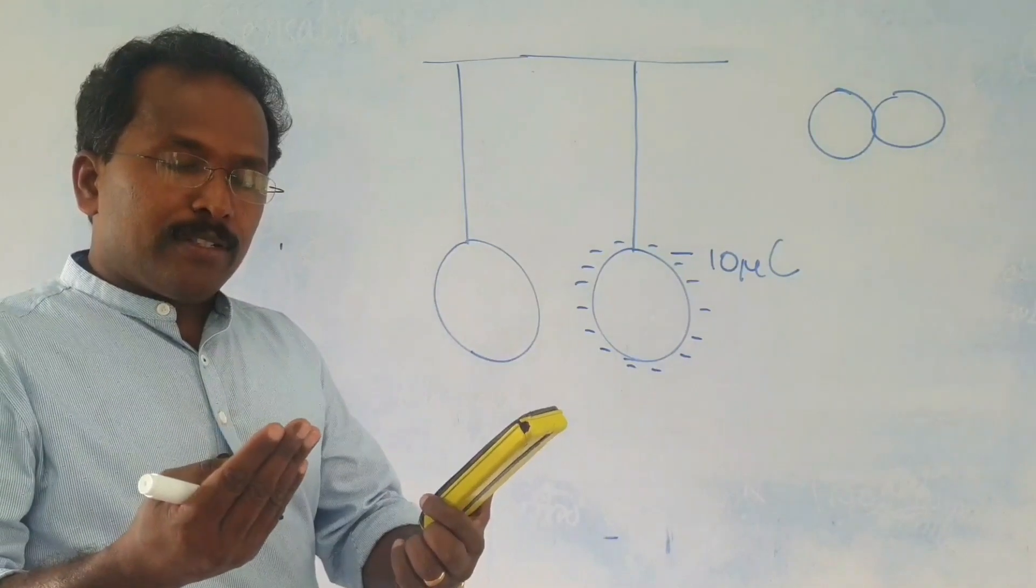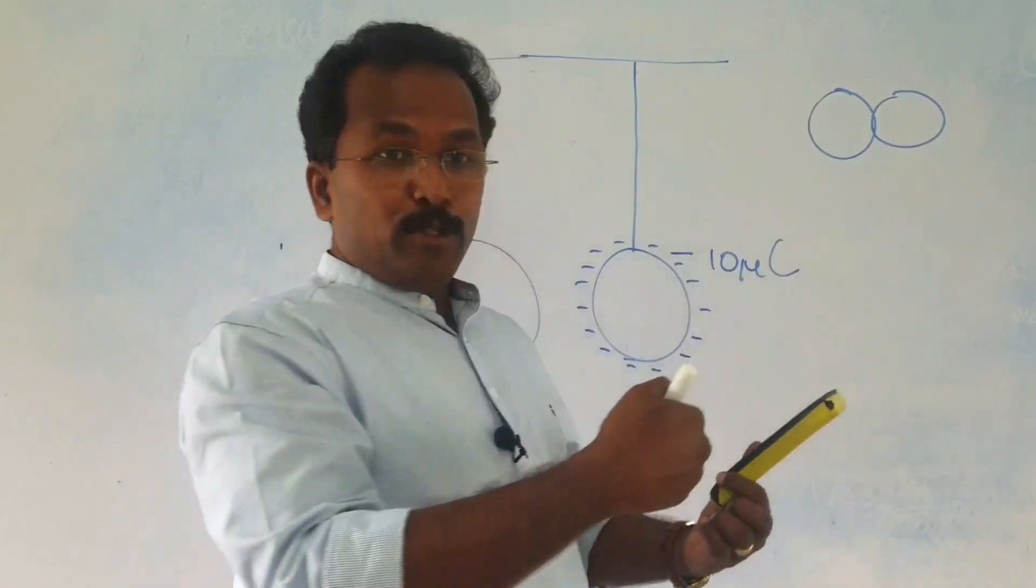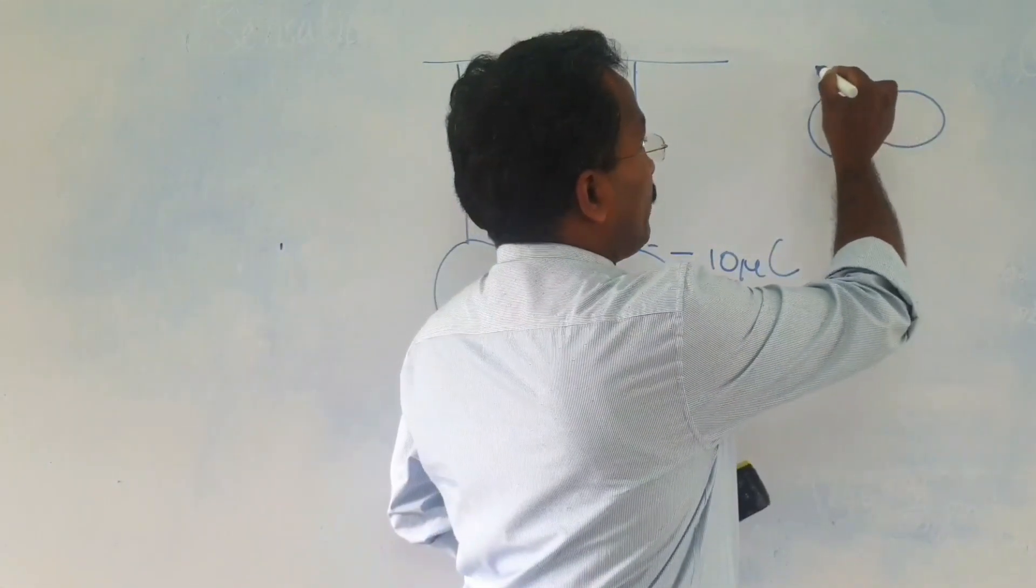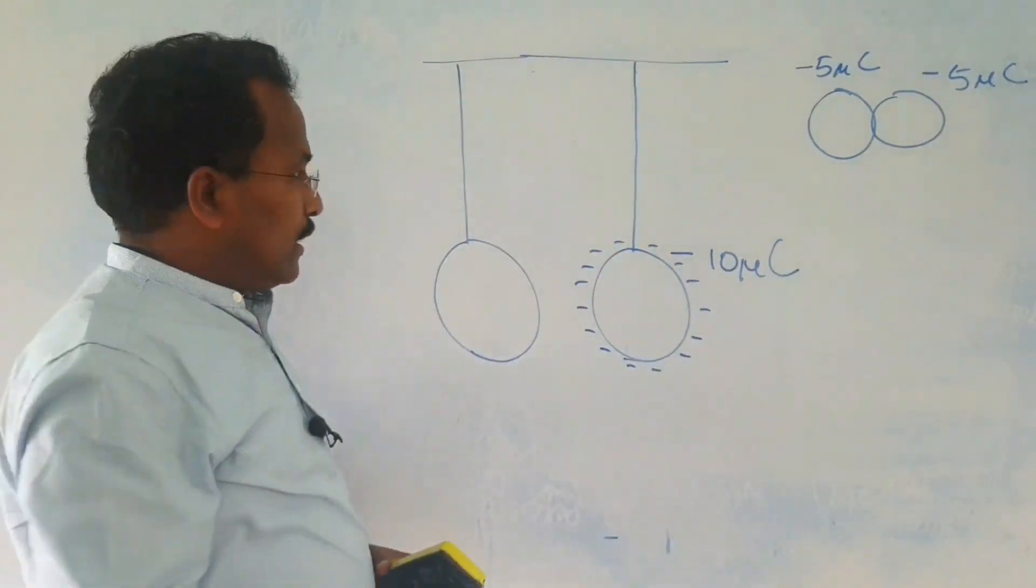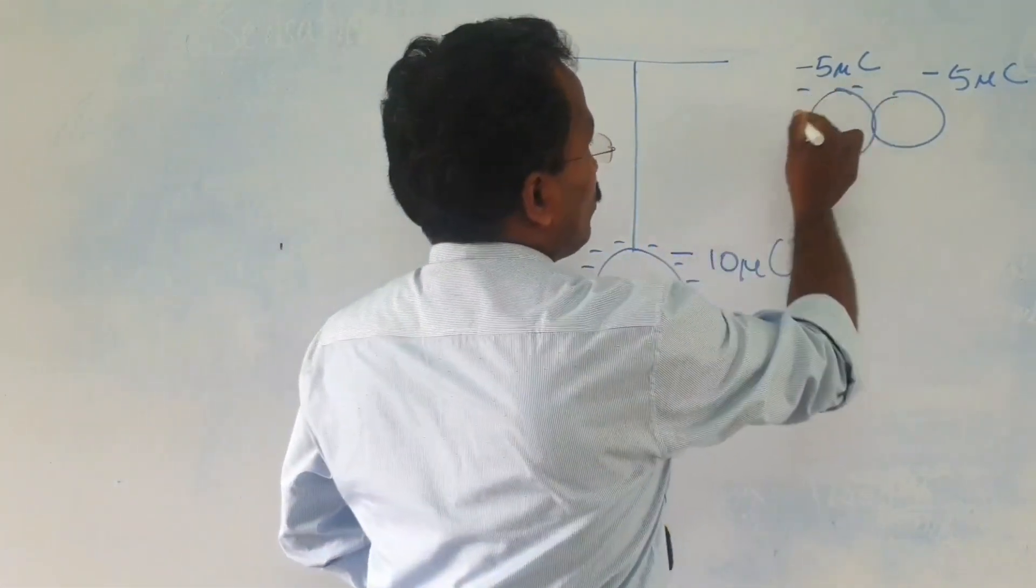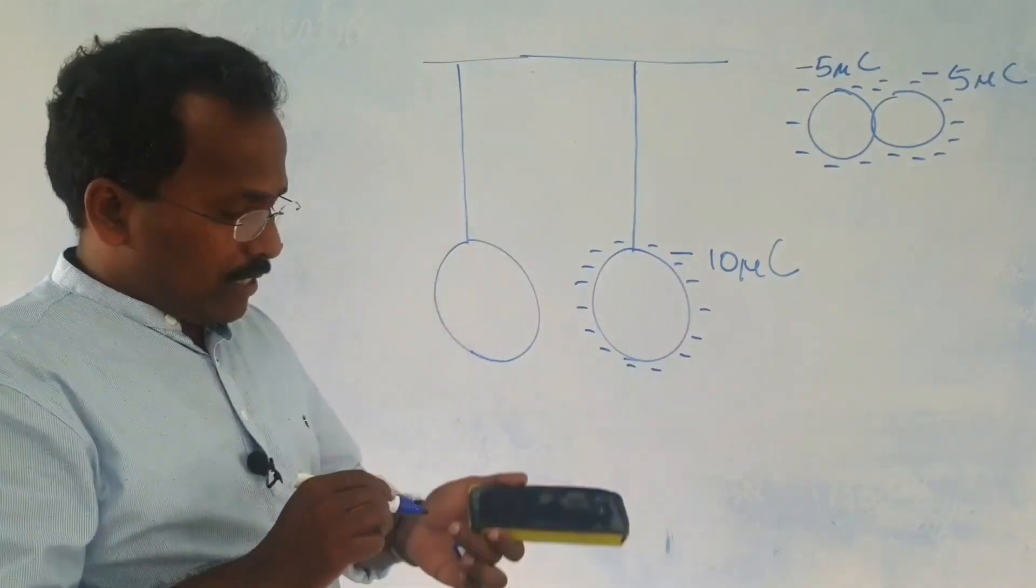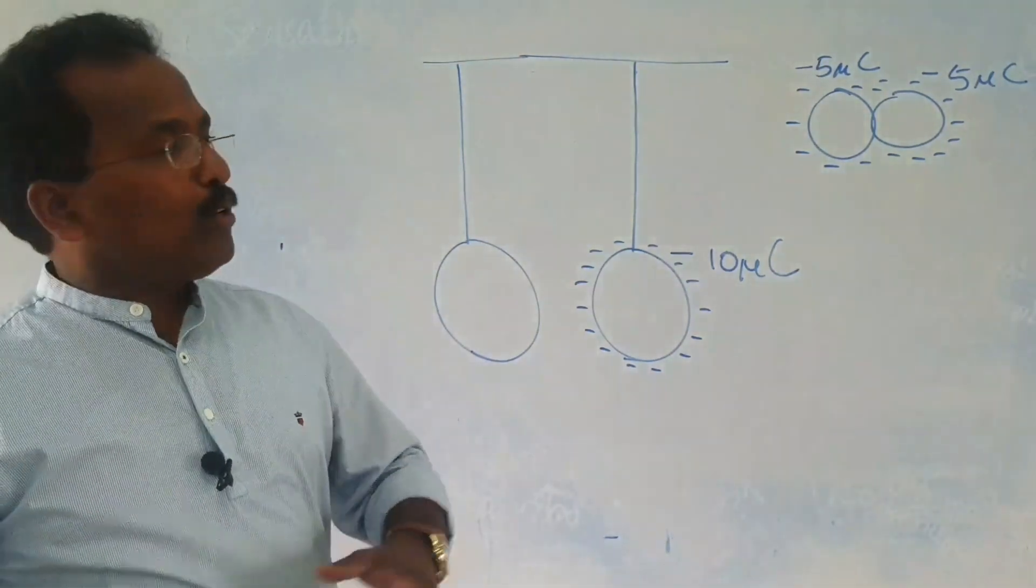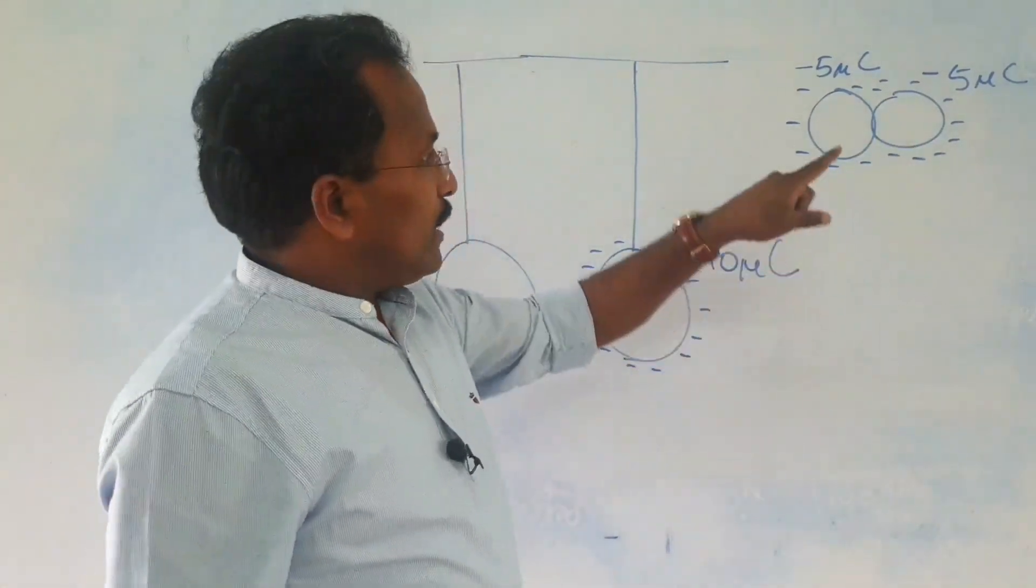The size is not matching. I am very sorry about that. Then what happens? It has 10 microcoulomb charge on that. Now, that charge will be redistributed because it is in contact with another conducting ball. So, naturally what happens is, this will get minus 5 microcoulomb, this will get minus 5 microcoulomb. The charge will be redistributed. Again, it comes to surface like this.